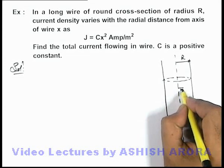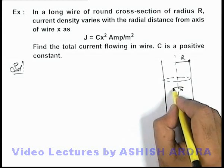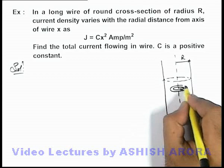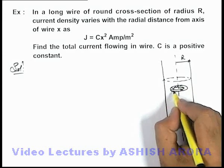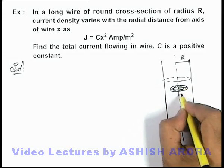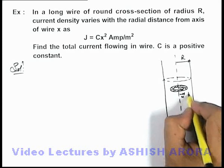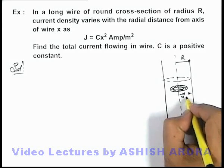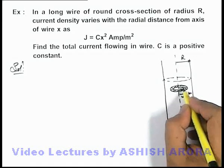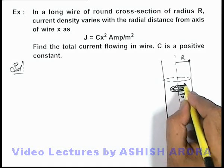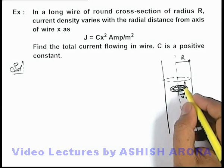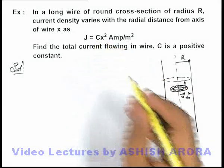In this situation, we consider an elemental ring — or you can say elemental strip — of radius x and width dx. This dx is so small that we can consider the current density remains almost uniform at cx² within it.